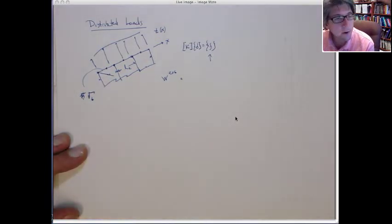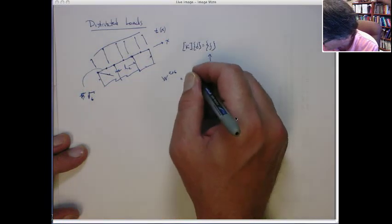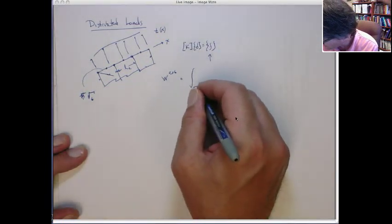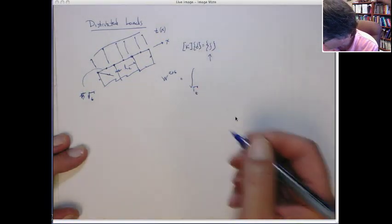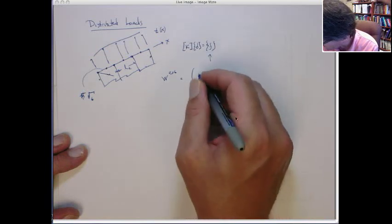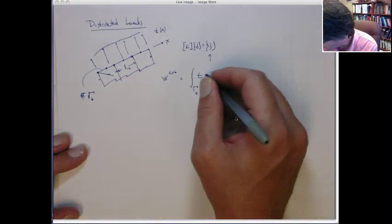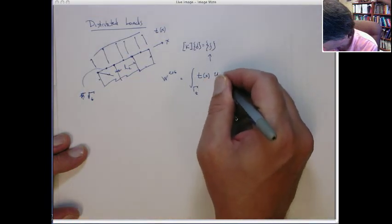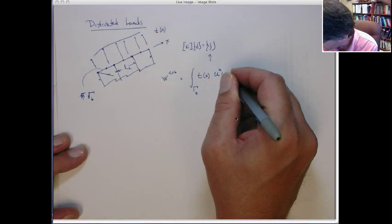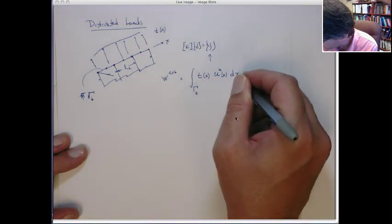That's the boundary where the traction is applied. So the work done by those forces is the integral over that boundary of the traction times the displacement. All right.